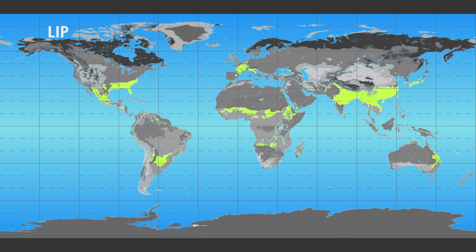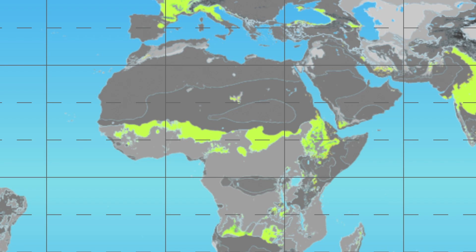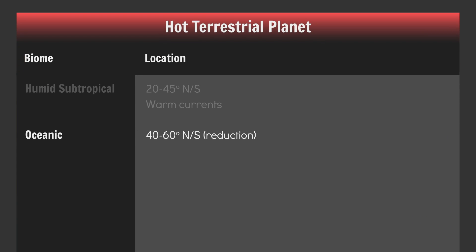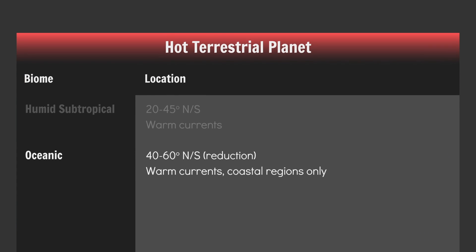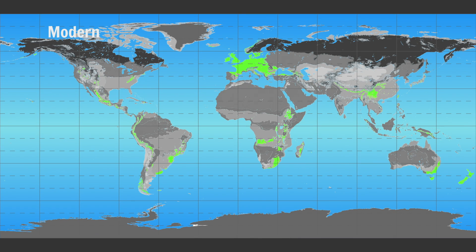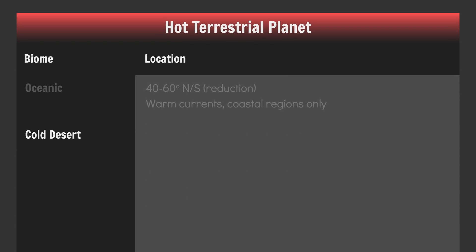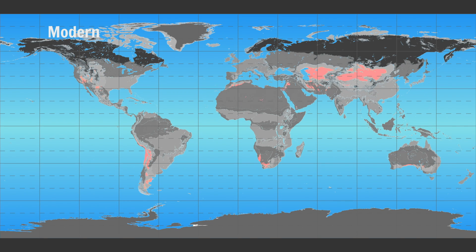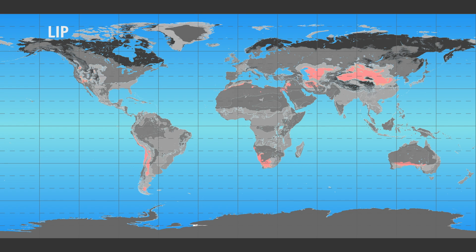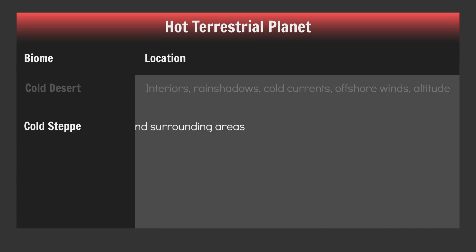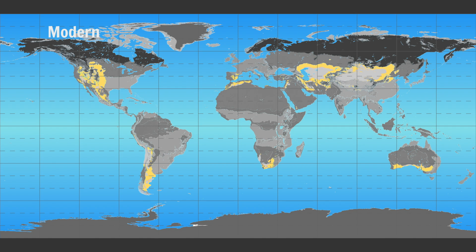The transition between savannah and hot steppes/hot deserts in North Africa was also humid subtropical, but this seems fairly unique to North Africa — likely a consequence of the same mechanisms that green the Sahara, though whether this holds in general is uncertain. Place your oceanic climates between 40 and 60 degrees north and south, but limit it to a strip around the coasts. Like before, place your cold deserts in Ferrel cell continental interiors and rain shadows, and at altitude in your hot desert zones. Surround those cold deserts with cold steppes.